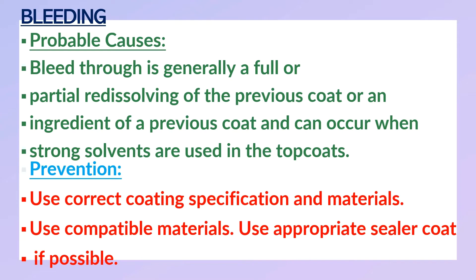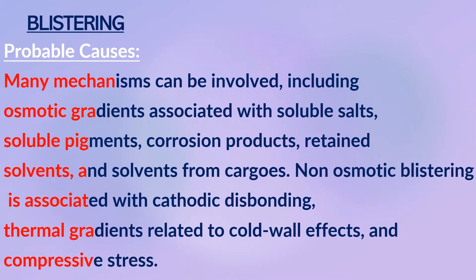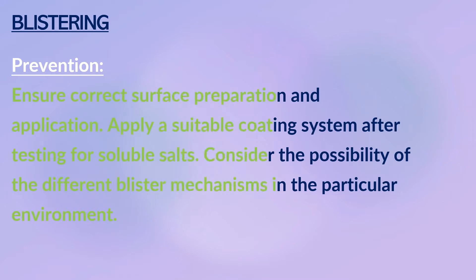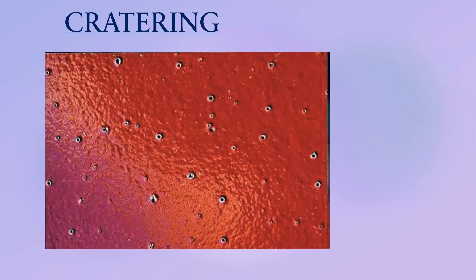Blistering: dome-shaped projections or blisters in the dry paint film through local loss of adhesion and lifting of the film from the underlying surface. Blisters may contain liquid, vapour, gas or crystals. Many mechanisms can be involved, including osmotic gradients associated with soluble salts, soluble pigments, corrosion products, retained solvents, and solvents from cargos. Non-osmotic blistering is associated with cathodic disbonding, thermal gradients related to cold wall effects, and compressive stress. Prevention: ensure correct surface preparation and application, apply a suitable coating system after testing for soluble salts, and consider the possibility of different blister mechanisms in the particular environment.